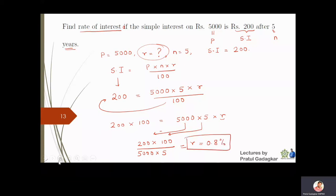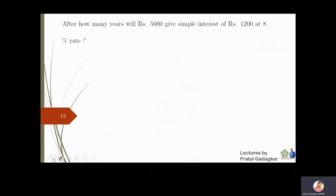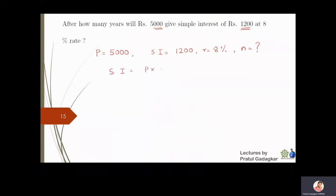Another problem: after how many years will rupees 5000 give a simple interest of rupees 1200 at 8 percent? So P = 5000, SI = 1200, r = 8%, and we need to find n. Using SI = P × n × r / 100: 1200 = 5000 × n × 8 / 100.